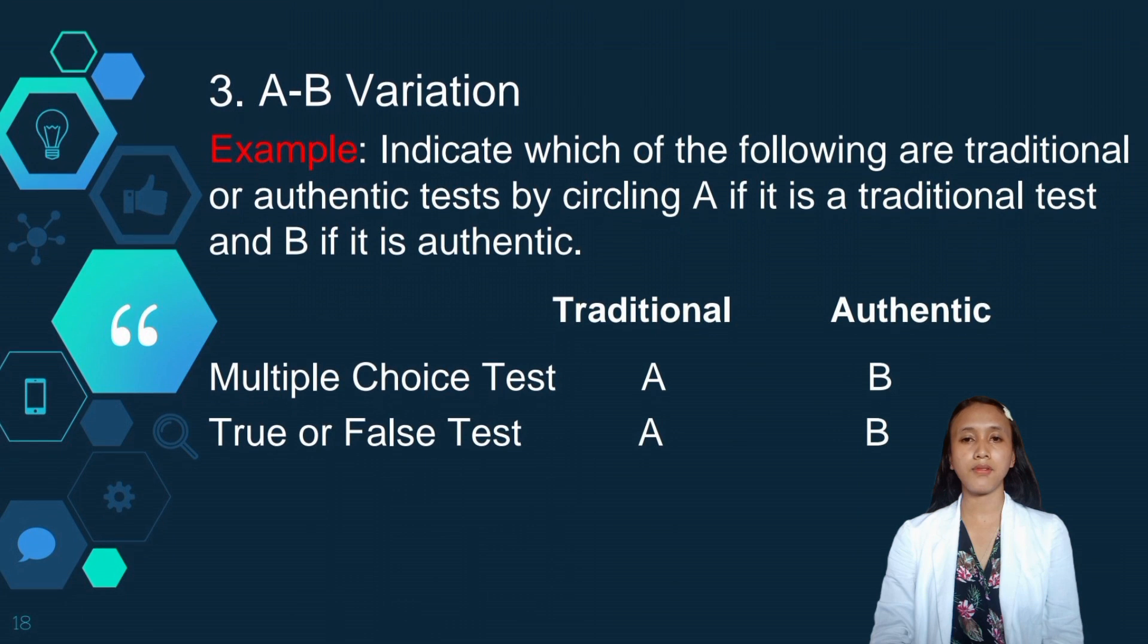The last one is A or B variation. In this format, the learner has to choose A or B rather than true or false. Example, indicate which of the following are traditional or authentic tests, by circling A if it is traditional tests, and B if it is authentic. The students will just select A for traditional or B for authentic.